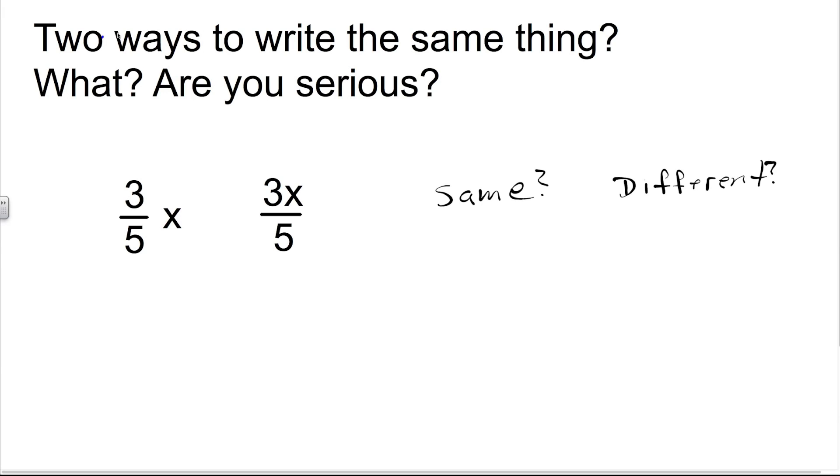Well, much like the English language, math has two ways to express the same thing sometimes. Let's take a look at how these two expressions are the same. If we just move them around a little bit and place them on top of each other, we can see they both have a 3 in the numerator and a 5 in the denominator.